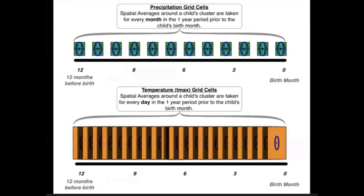That was the spatial component. Of course, we also want a temporal component. Our outcome is birth weight at birth. We perform this same sort of spatial averaging in the case of rainfall for every month prior to when the child was born, and in the case of temperature for every single day prior to when the child was born. So we can build a life course history of extreme weather exposure throughout any of our respondents, specific to time and location.